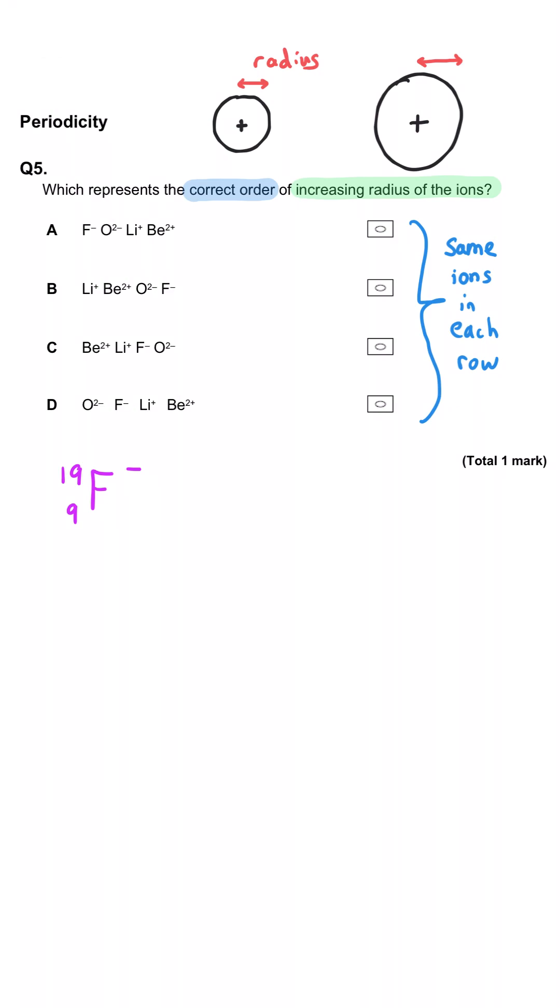Fluoride has nine protons and ten electrons, whereas oxide has eight protons and ten electrons.